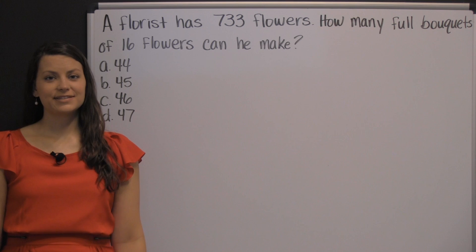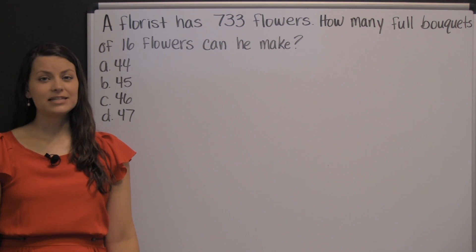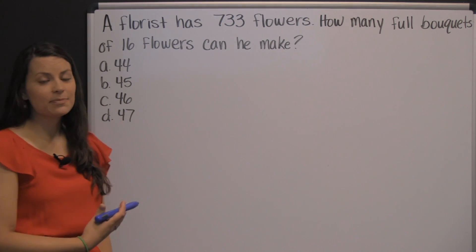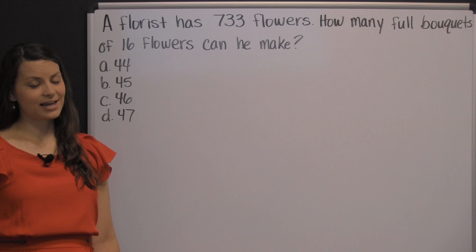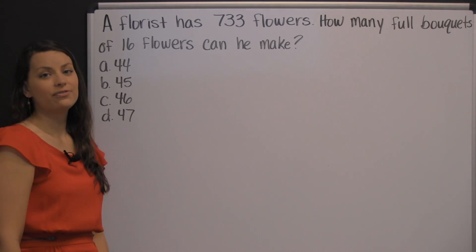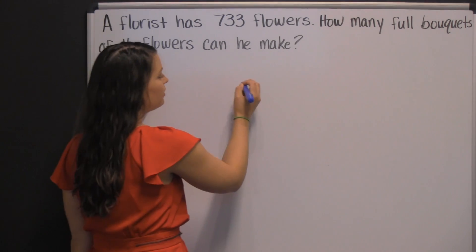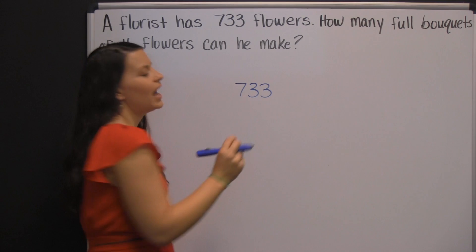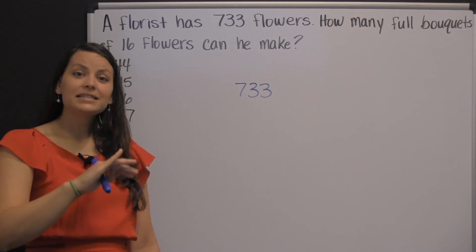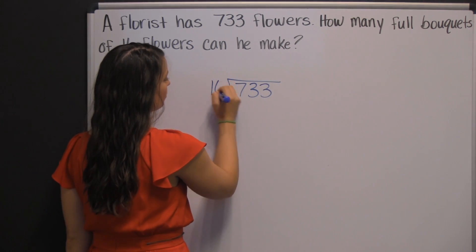One of the math sections tested on the ASVAB is arithmetic reasoning. Since you won't be able to use a calculator, you'll need to be proficient at adding, subtracting, multiplying, and dividing by hand. Here's one example: a florist has 733 flowers. How many full bouquets of 16 flowers can he make? He's trying to take those 733 flowers and divide them up into bouquets of 16 flowers. Since he's dividing them up, we're going to divide — 733 divided by 16.